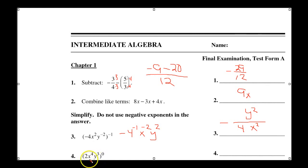Number 4, as we look at it, anything to the 0 power is just 1.